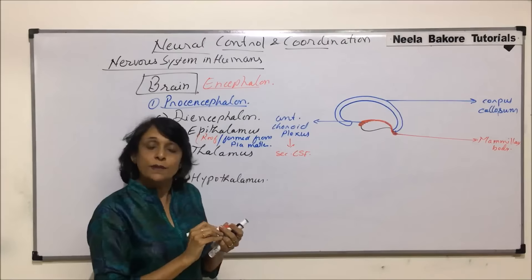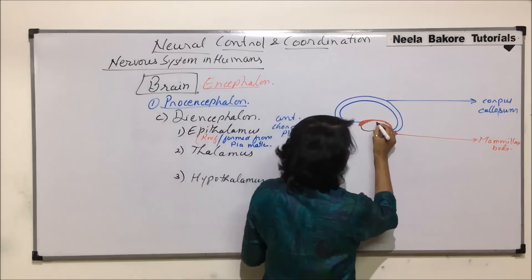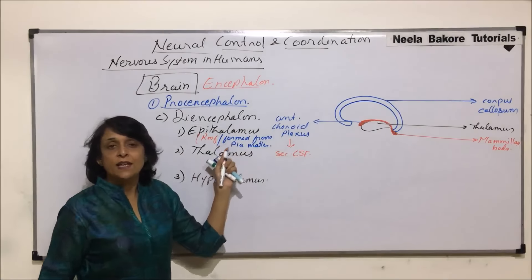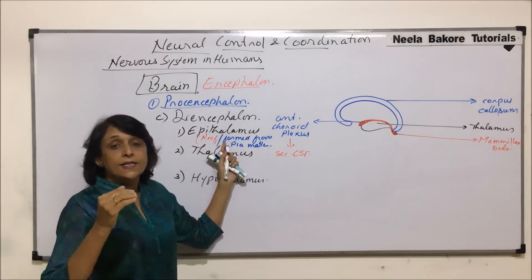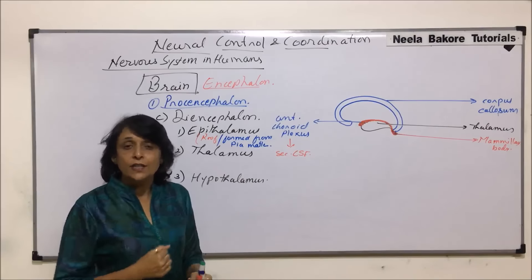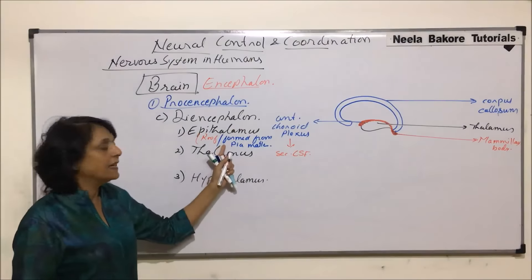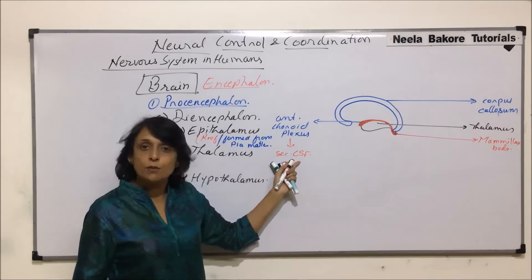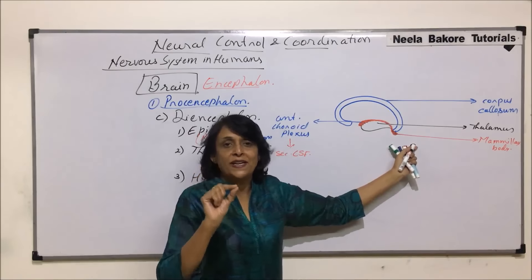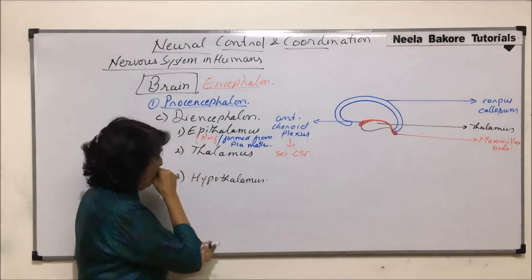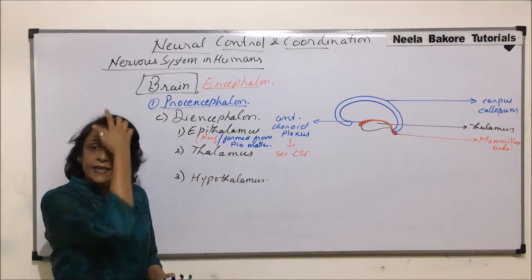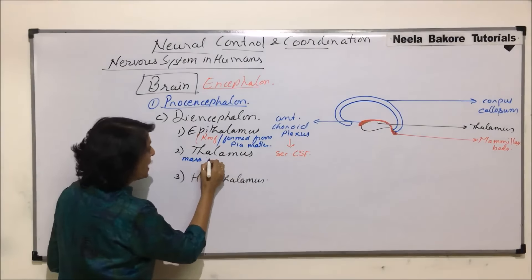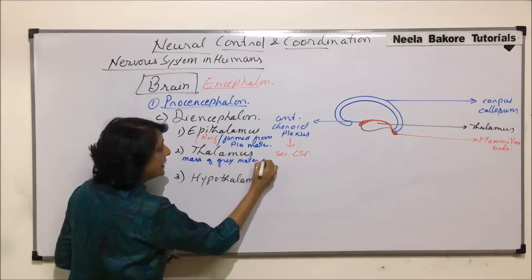From this side we are seeing only one mammillary body, but these are paired structures. The part visible here is thalamus. So there are three parts: epithalamus, which makes the roof of diencephalon, formed from pia mater extending into deep fissures. The anterior part is the anterior choroid plexus secreting cerebrospinal fluid, and the posterior end projects into paired bulb-like structures called mammillary bodies. Thalamus is a mass of grey matter in the white matter, and it is a paired structure.